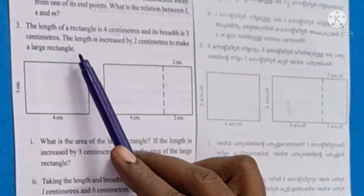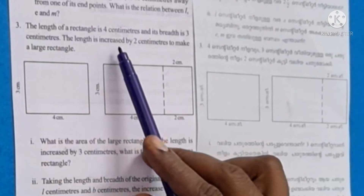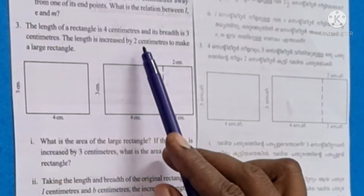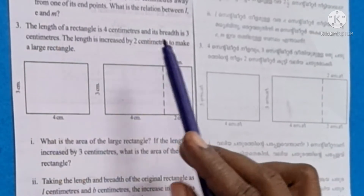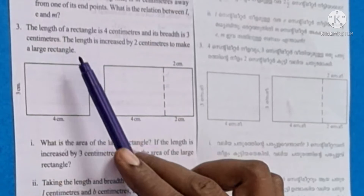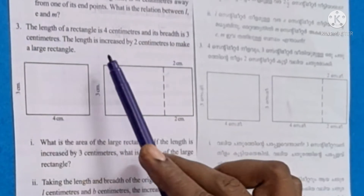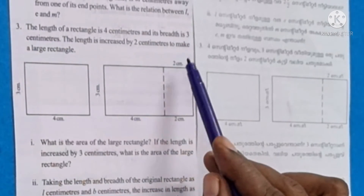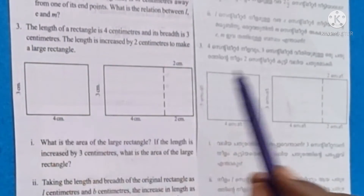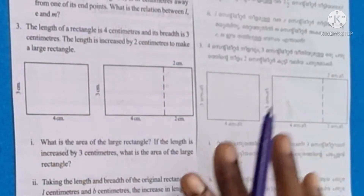The length of a rectangle is 4 cm and its breadth is 3 cm. The length is increased by 2 cm to make a larger rectangle.